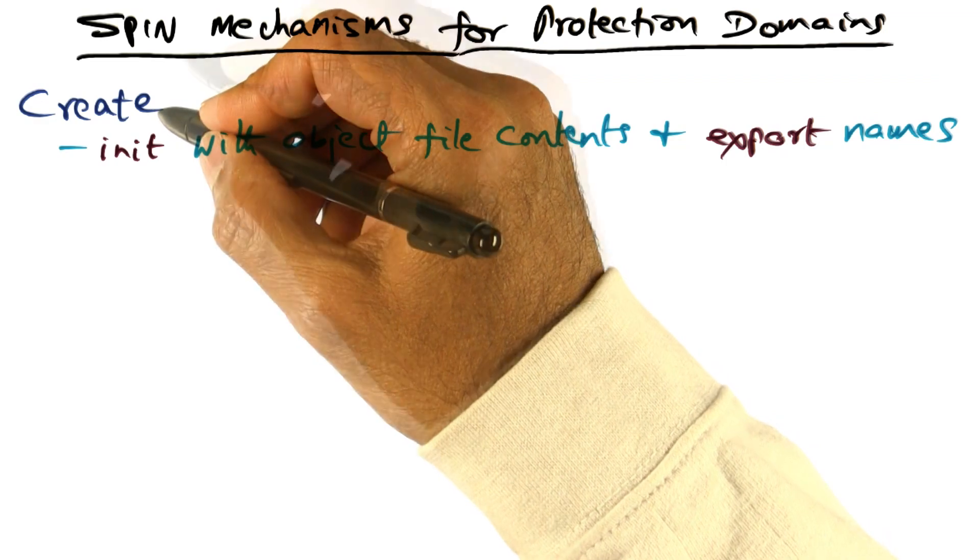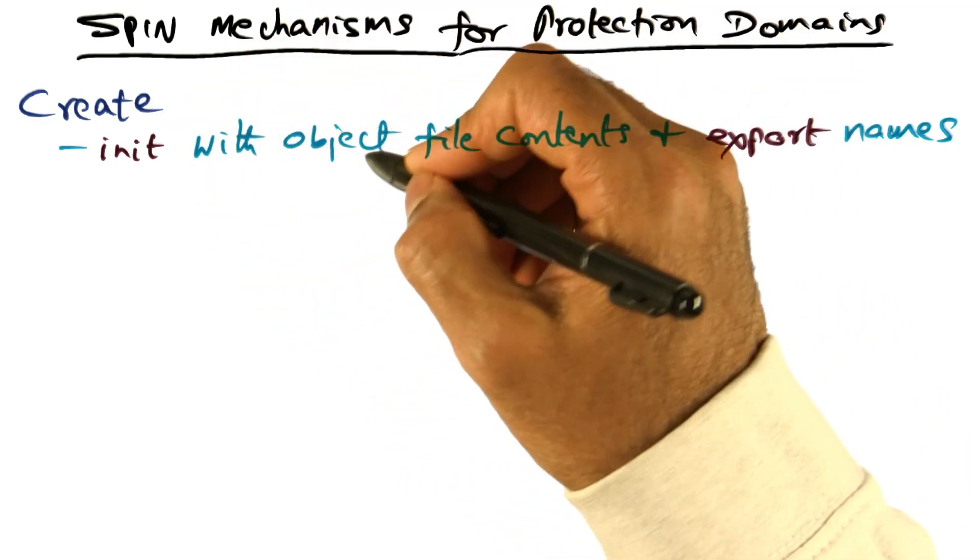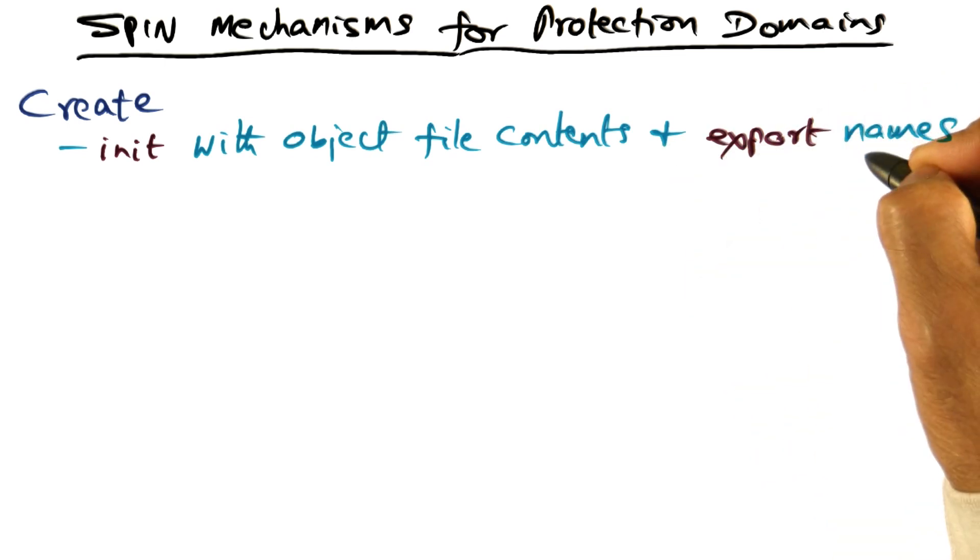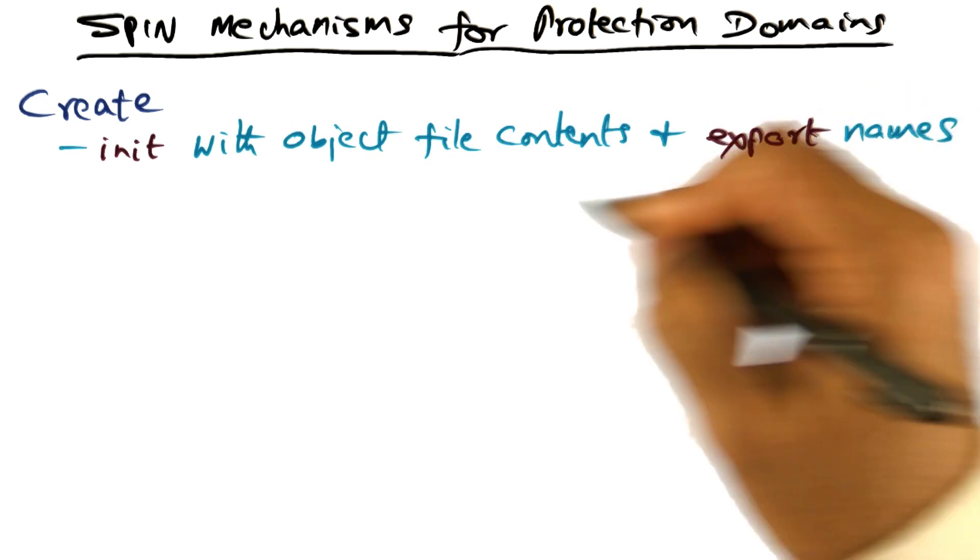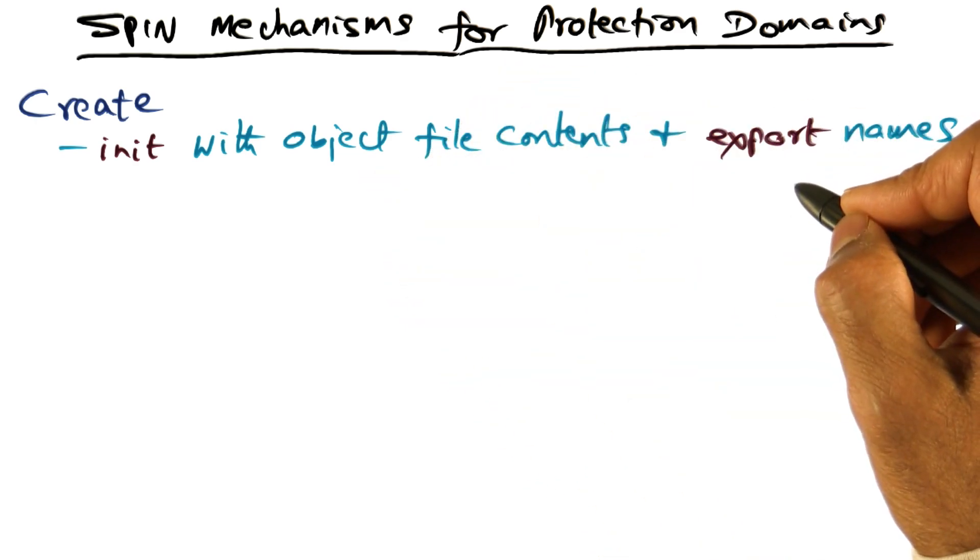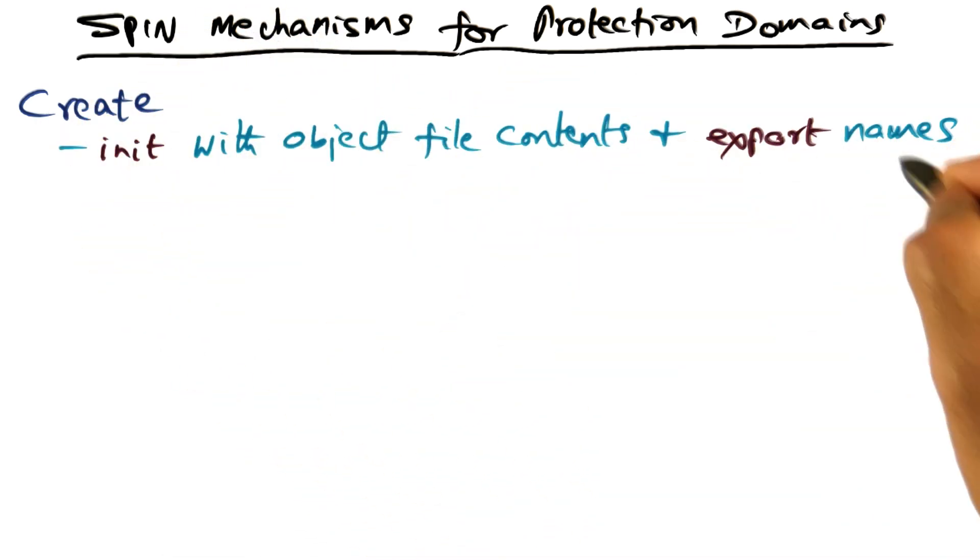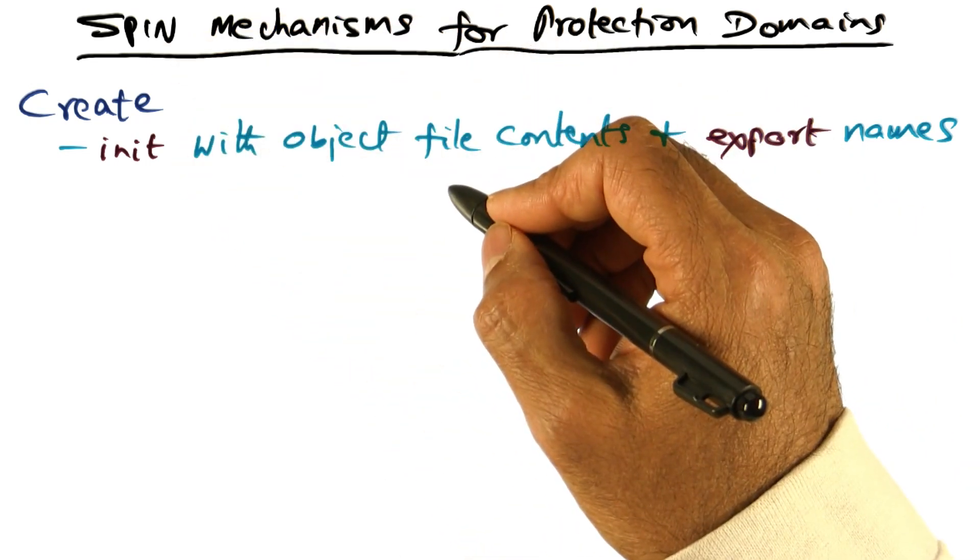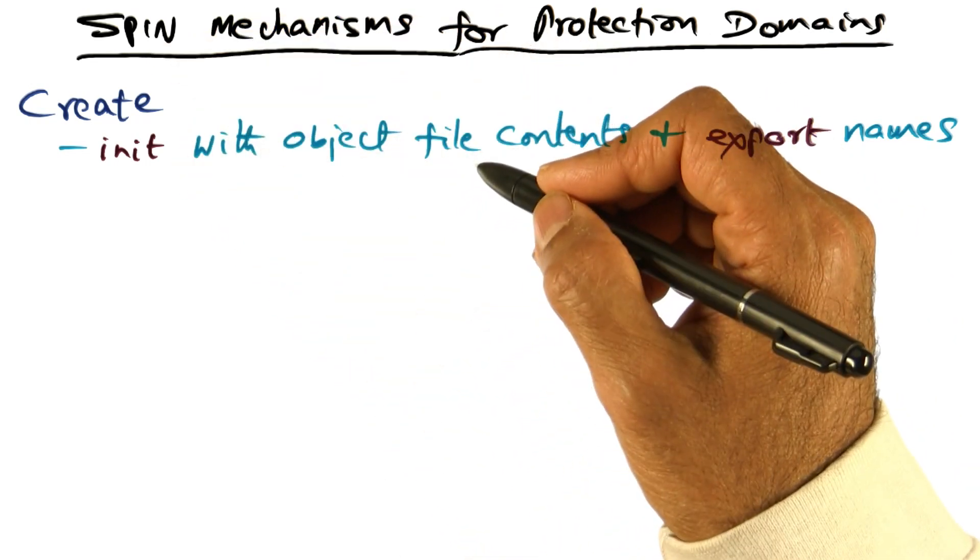This mechanism in SPIN allows initiating an object file with the contents and exporting the names that are contained as entry point methods inside the object to be visible outside. That's what this create call provides to a service creator.